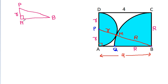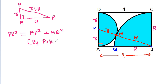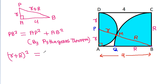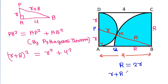In triangle APB, angle A is 90 degrees. AP equals small r, AB equals 4, and PB equals small r plus capital R. By the Pythagorean theorem, PB² equals AP² plus AB². Since R equals 2r, small r plus capital R equals r plus 2r, which equals 3r.